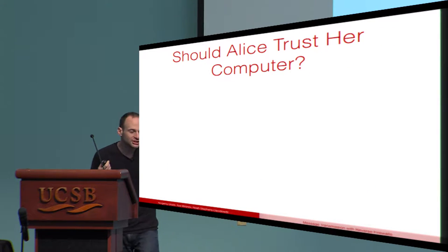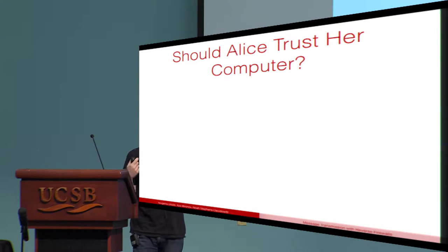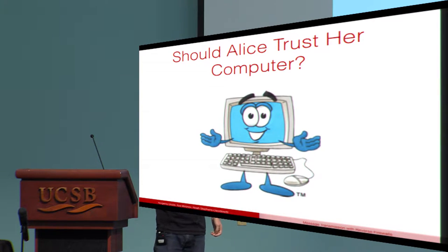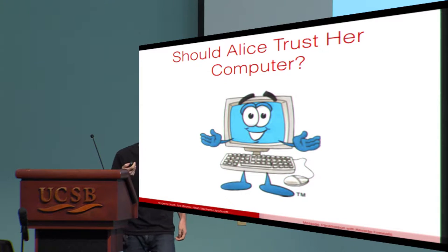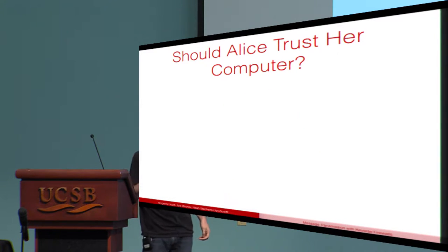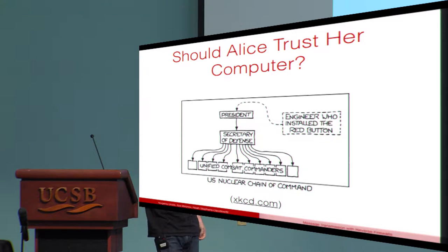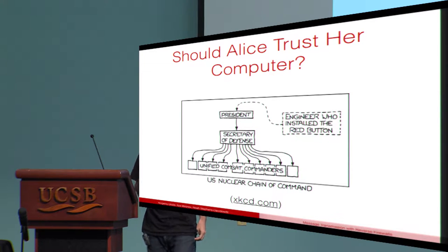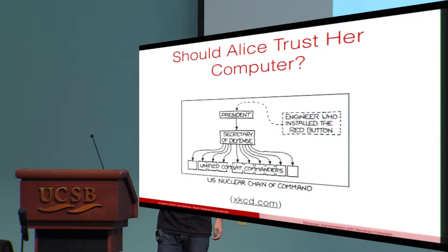The question we start with today is: should Alice trust her computer? Here's Alice's trustworthy computer — he seems like a nice guy, but one can never be too careful. The basic problem we're concerned about is that we don't want the last person to have touched our computer to be able to completely compromise our security, certainly not our national security.